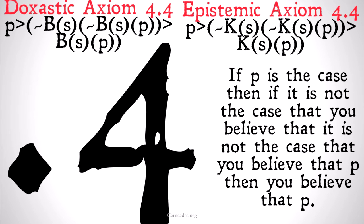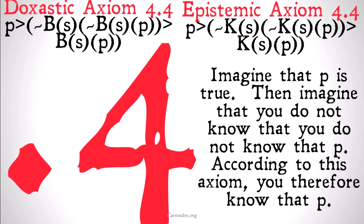Basically, if P is the case, then if it's not the case that you believe that it's not the case that you believe that P, then you believe that P. Or imagine that P is true, then imagine that you don't know that you don't know that P — you don't know whether or not you know P. According to this axiom, therefore, you know that P.